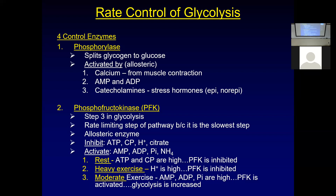So you get a fight-or-flight response and epi and norepi get released — immediately activating phosphorylase and beginning to break down glycogen. Calcium from muscle contractions, AMP, ADP, and epi and norepi all increase in response to muscle contraction. All of these things increase during exercise and tend to increase in proportion to exercise intensity. Exercise itself functions to turn on the phosphorylase enzyme to a greater extent and begin to break down glycogen to supply glucose for glycolysis.